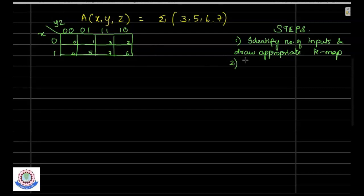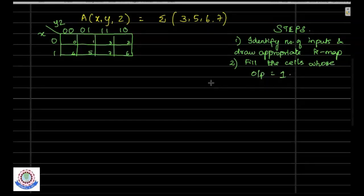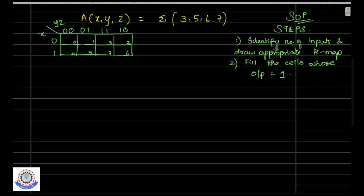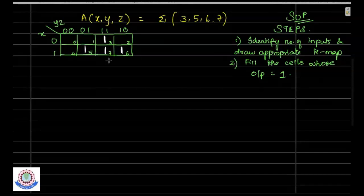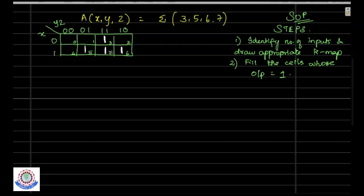The second step is to fill the cells whose output is equal to 1. We are designing the standard SOP equation. Now I need to fill the cells whose output is 1. I need to fill the 3rd cell with 1, the 5th cell with 1, the 6th cell with 1, and the 7th cell with 1. This step is clear.